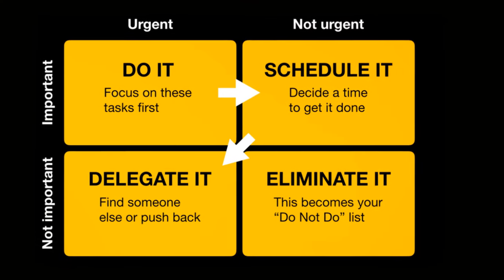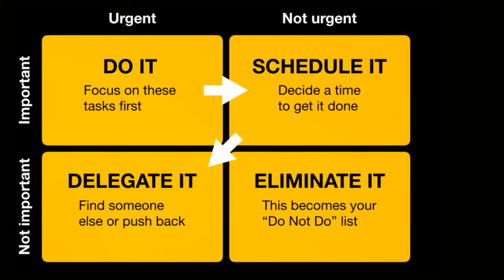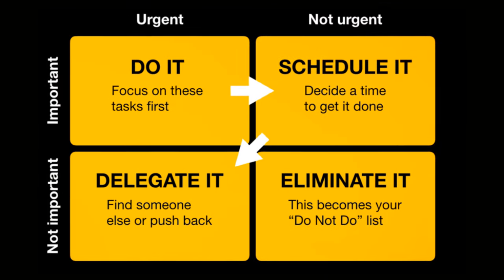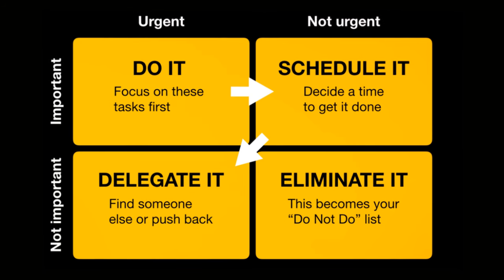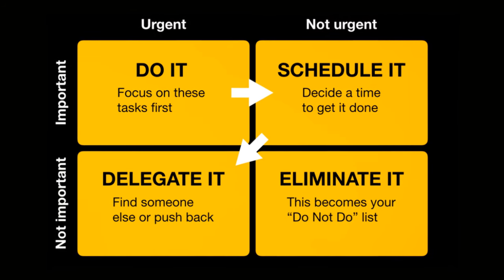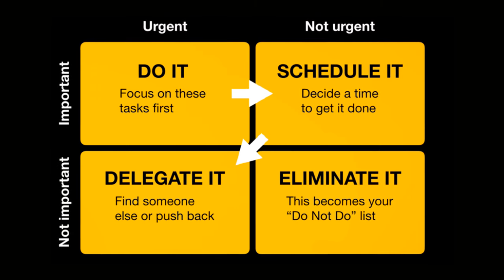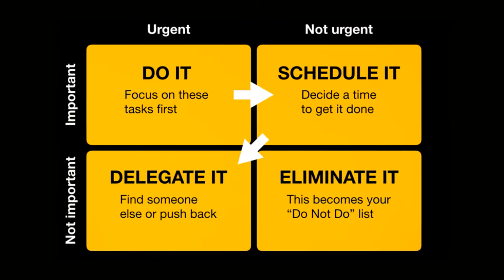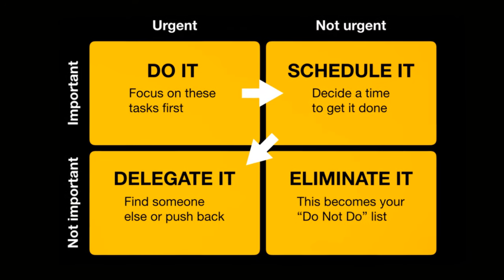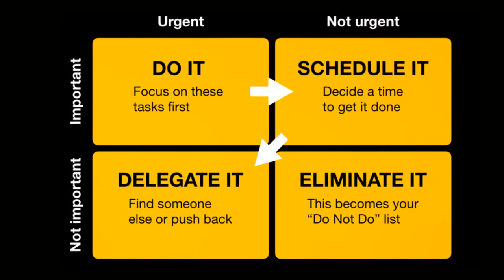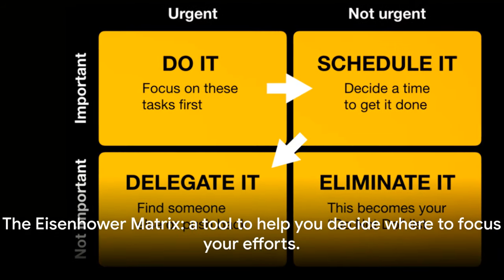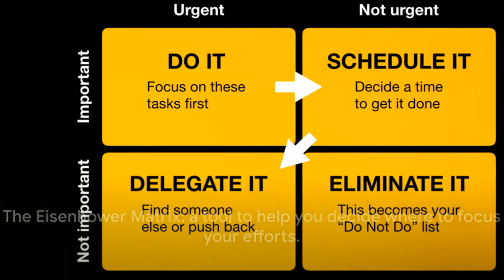The top left quadrant is for tasks that are both urgent and important, like meeting deadlines or handling crises. The top right quadrant is for important but not urgent tasks, which contribute to your long-term goals. The bottom left is for urgent but not important tasks, usually distractions that demand your time. Finally, the bottom right is for tasks that are neither urgent nor important, and these can often be eliminated. The Eisenhower Matrix, a tool to help you decide where to focus your efforts.